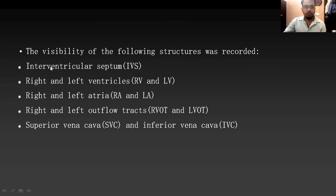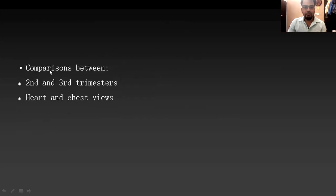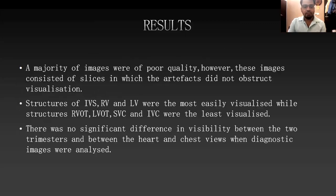The visibility of the following structures was recorded in our study: interventricular septum, both ventricles, both atria, both outflow tracts, and superior and inferior vena cava. A comparison was done between the second and third trimesters, and between the heart and chest views.